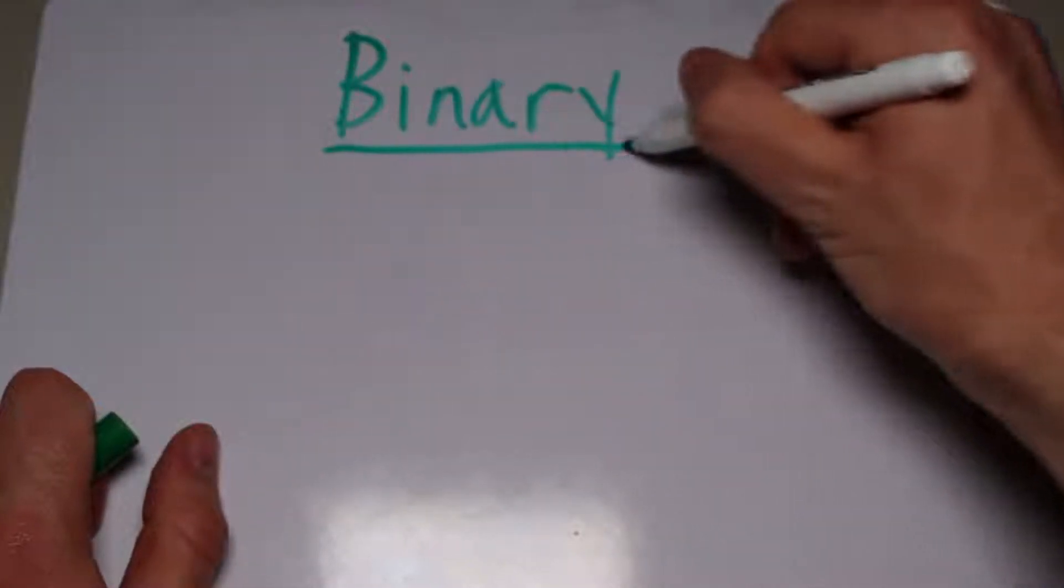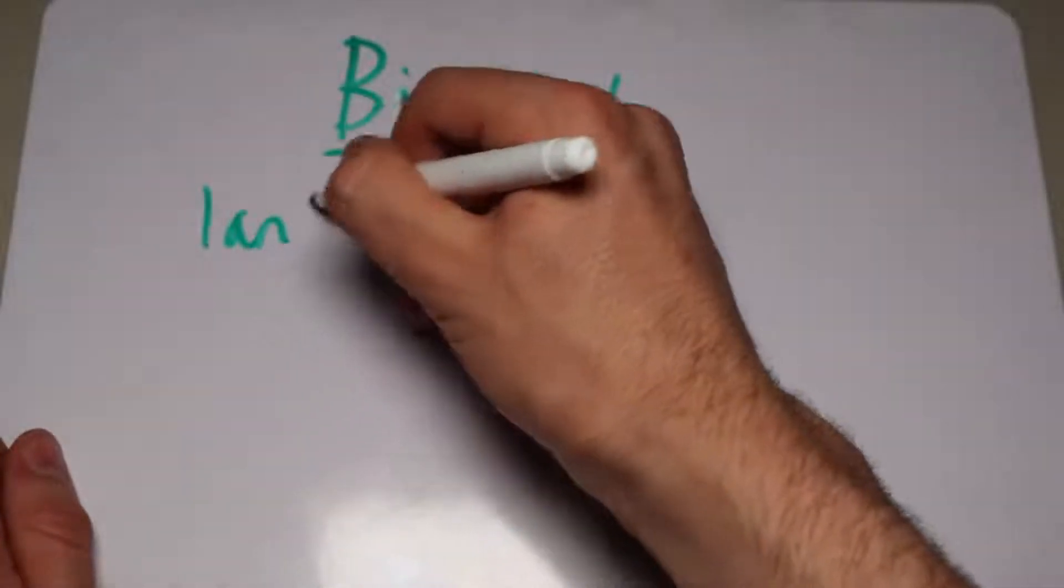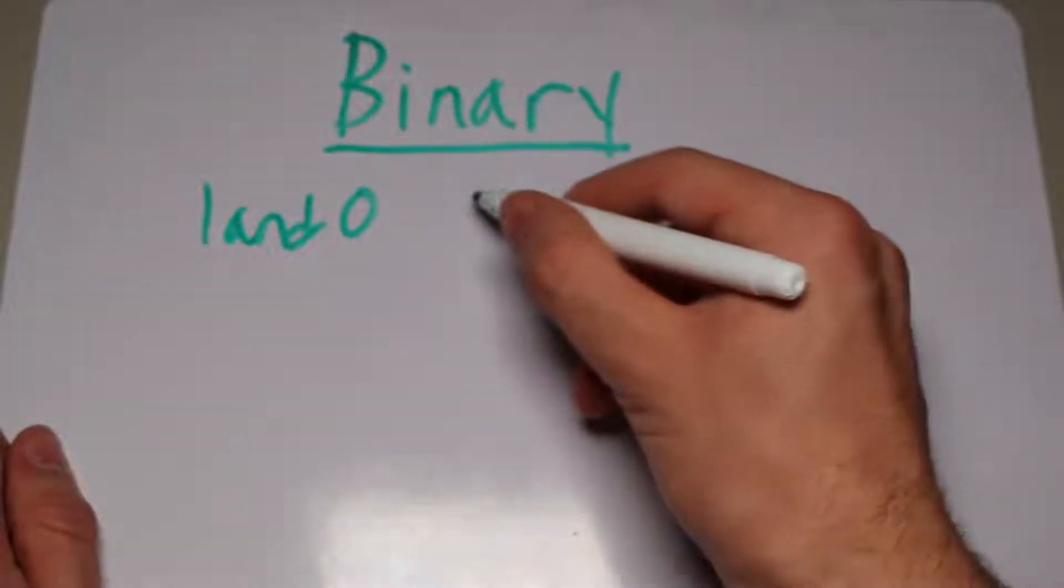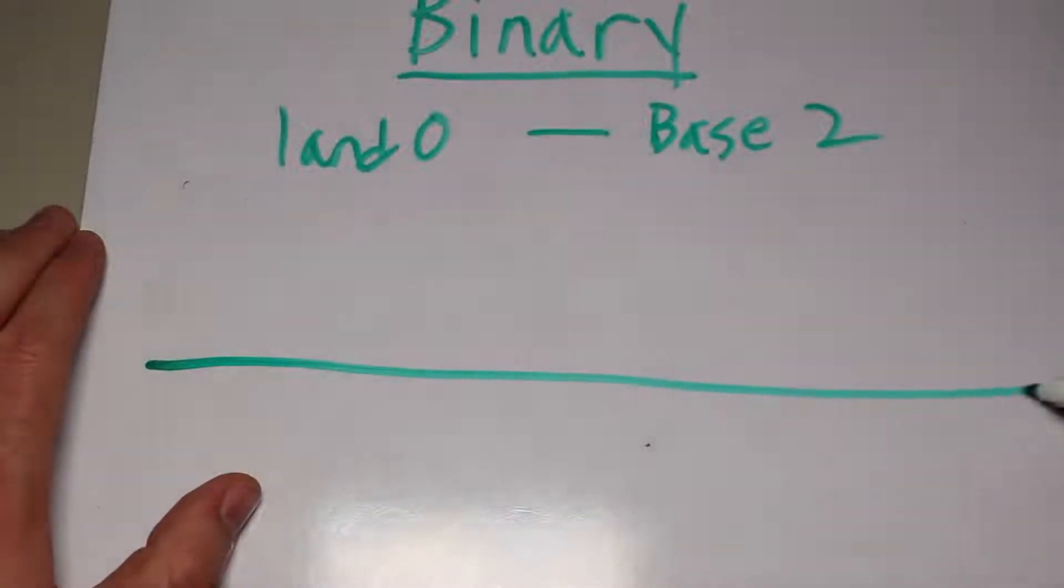Before we get into the construction of the DAC, let's quickly review how binary and digital logic work for those who are still unfamiliar. In binary, there are only two states, meaning that we use a base two counting system. Let me give you an example counting from zero to five. Zero is zero, and one is one, of course.